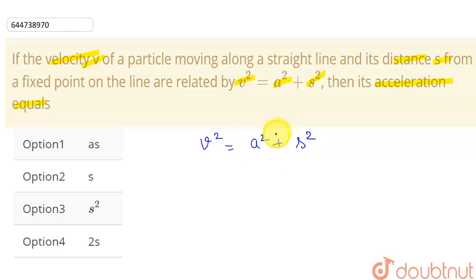s is any value, so we can differentiate this equation on both sides with respect to time. This will give me 2v dv/dt.